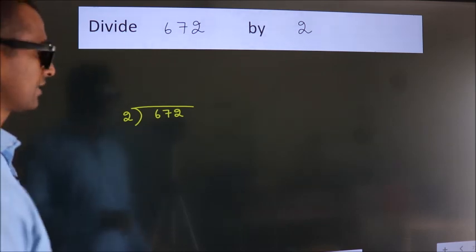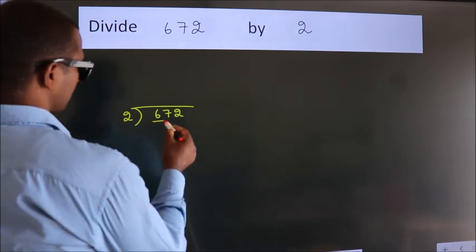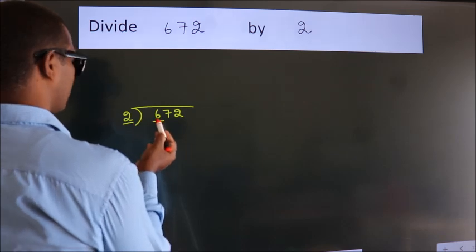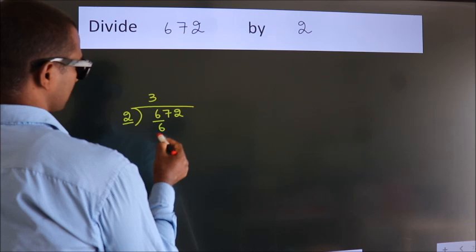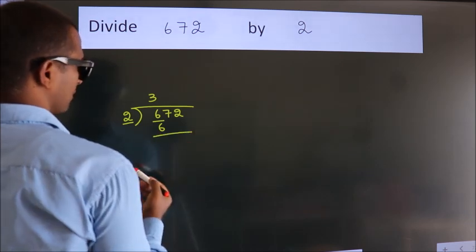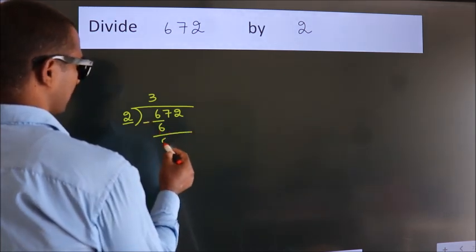Here we have 6. Here 2. When do we get 6? In 2 table. 2 times 3 is 6. Now we should subtract. We get 0.